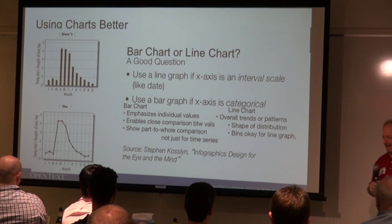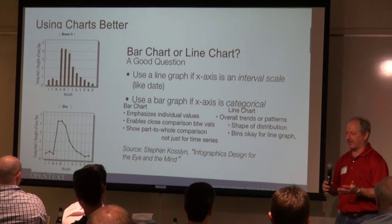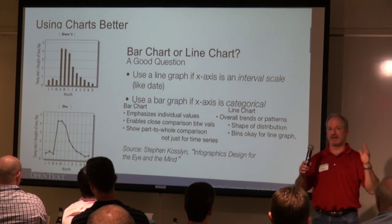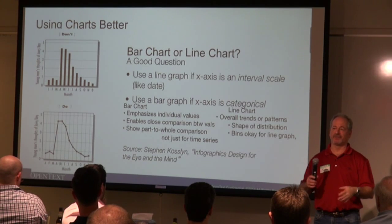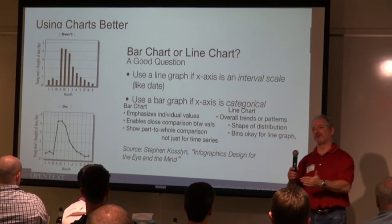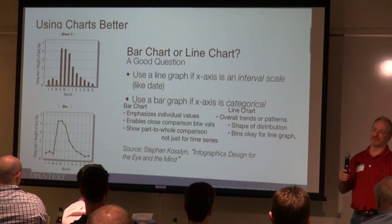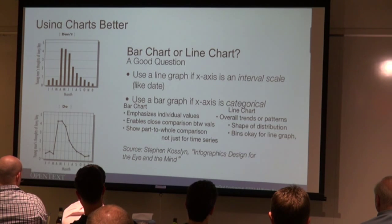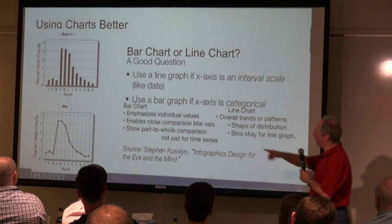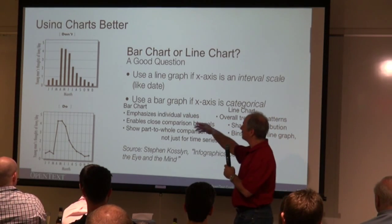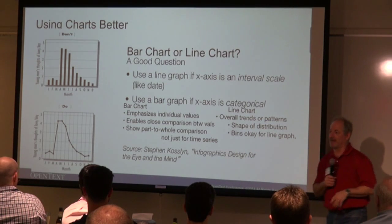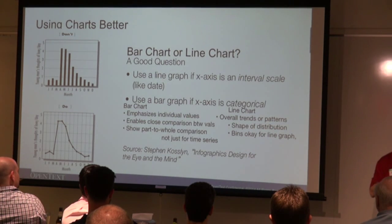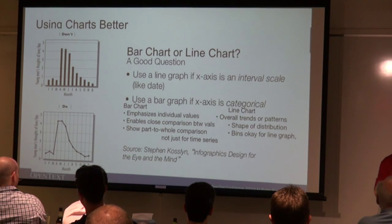The bottom line is every chart tells a story. Going back to attentive versus pre-attentive attributes: line charts are for trends over time, and bar charts are for comparing discrete values. If it's categorical, use a bar chart; if it's trends over time, use a line chart. The top chart shows different months — if you're charting months, bars are not the way to go because you want to show the trend. It's a lot easier to see the trend in a line than in bars.